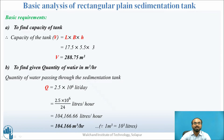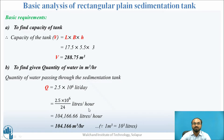We also need to calculate the quantity of water in m³ per hour. Q = 2.5 × 10⁶ liters per day. Dividing by 24 gives liters per hour: 104,166.6 liters per hour. Converting to m³ per hour: Q = 104.166 m³ per hour.